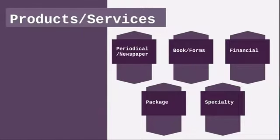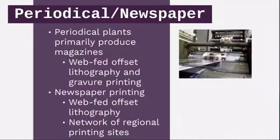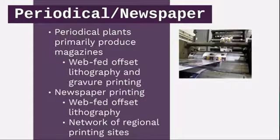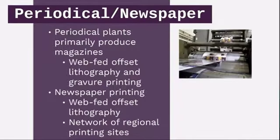There are lots of different products and services offered. First is periodical and newspaper print. Periodical plants primarily produce magazines using web-fed offset lithography or gravure printing. Local examples include R.R. Donnelly, Quad Graphics down in Effingham, Kingery Printing, and Wave Graphics or Premier Printing up in Champaign. Newspaper printing also uses web-fed offset lithography and has a network of regional printing sites.